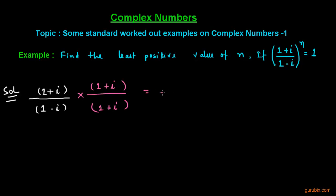Then it will be 1 square plus 2 into 1 into iota plus iota square and here we have 1 square minus iota square.